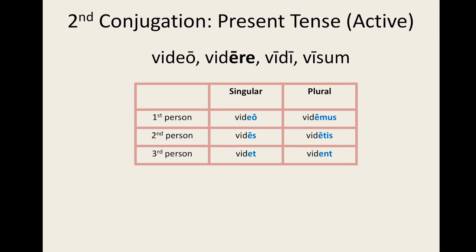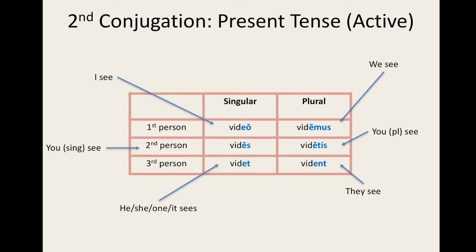So we have: video, 'I see'; vides, 'you (singular) see'; videt, 'he, she, it sees'; videmus, 'we see'; videtis, 'you (plural) see'; and vident, 'they see.'